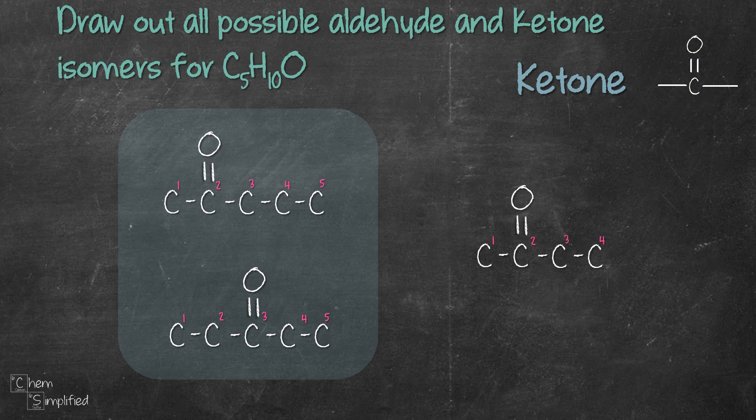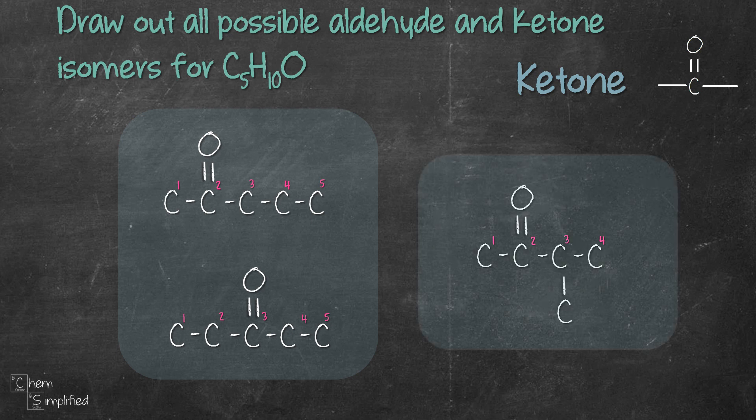Here's our four carbon chain and then we will stick the fifth carbon on C3. Looks like there's only one way to stick the fifth carbon on the four carbon chain. If we were to stick the fifth carbon on C4 it will actually give us the same structure as the first ketone. Also we can't shorten the chain to three carbon chain so that means we're actually done drawing all ketones.